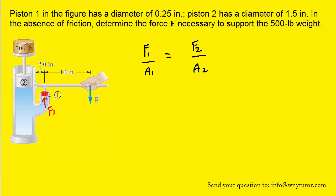F2 would be the 500 pound weight that's pressing downward on piston 2. So we have a downward acting force F2 which equals 500 pounds, and again the area A2 is the circular area of piston 2.